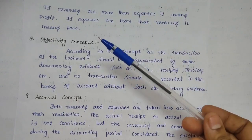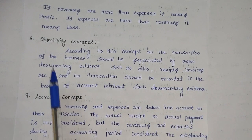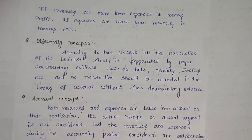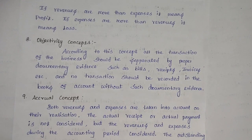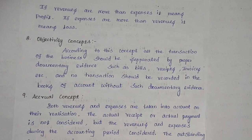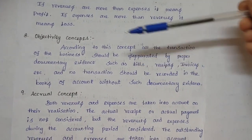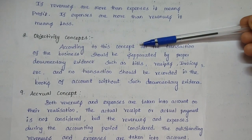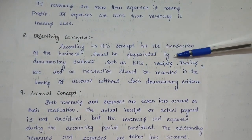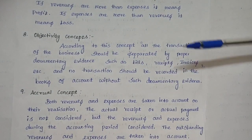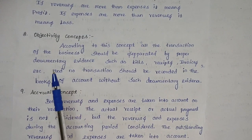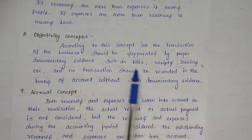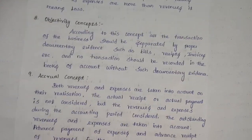The eighth concept is the objectivity concept. According to this concept, all transactions of the business should be supported by proper documentary evidence such as bills, receipts, and invoices. No transactions should be recorded in the book of accounts without such documentary evidence. This ensures transactions are verifiable and useful for auditing.